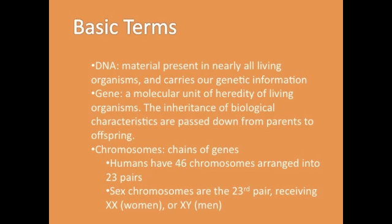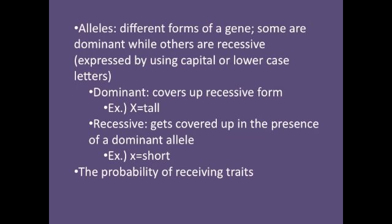Chromosomes are the chains of genes that we carry. Each human has about 46 of them, or 23 pairs. Alleles are what we use to understand our genes. They are different forms of a gene. Some are dominant, while others are recessive.